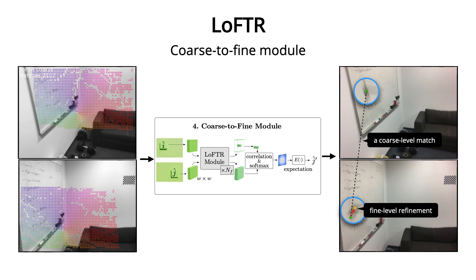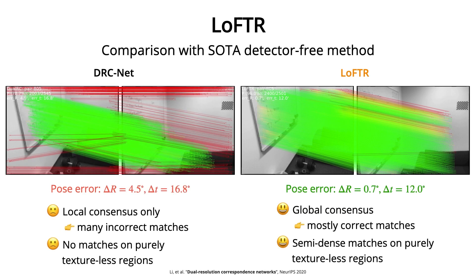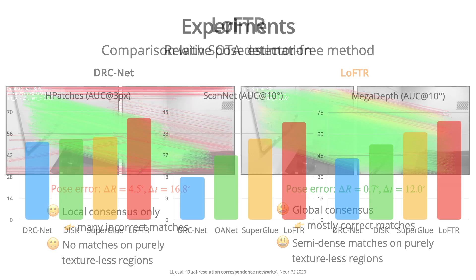Here is the comparison with the state-of-the-art detector-based feature matching method SuperGlue. Since no interest points are detected on textureless regions, SuperGlue can only produce matches on regions with good textures. On the other hand, LOFTR produces semi-dense matches that are well distributed in the entire co-visible area. And here is the comparison with the state-of-the-art detector-free method DRC-Net. DRC-Net produces matches that have local consensus only, with many incorrect matches, and it produces no matches on purely textureless regions.